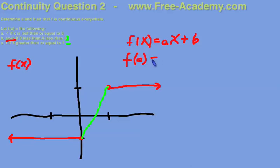We put 0 in for x, and we get a times 0 plus b. f of x equals negative 1. Now a times 0 is of course equal to 0. So for this case, we get that b equals negative 1.